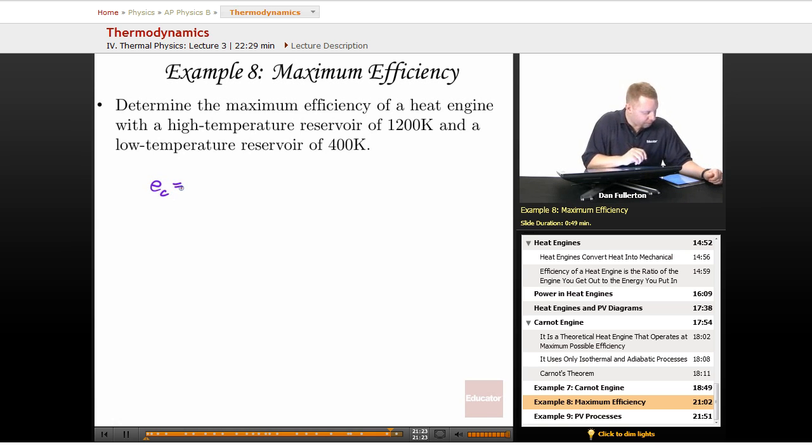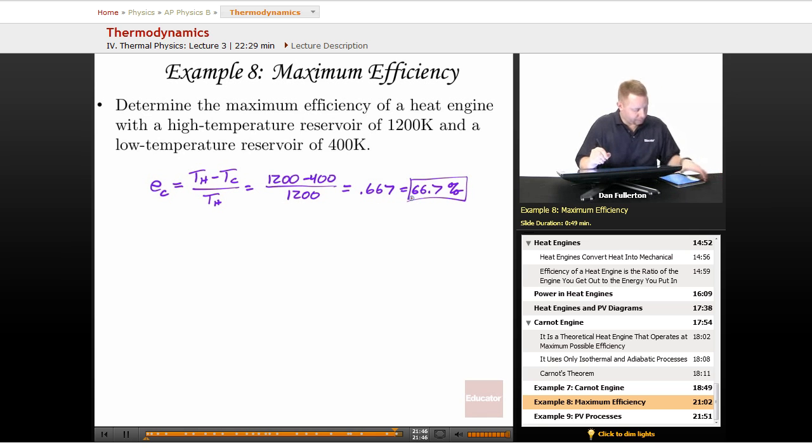So the Carnot efficiency is TH minus TC over TH, or 1200 K minus 400 K divided by 1200 K, which is going to be 0.667 or about 66.7 percent.